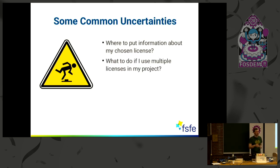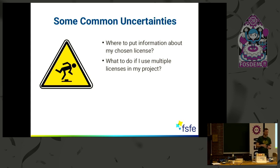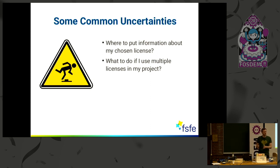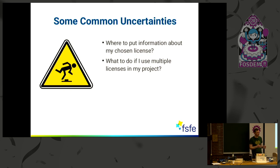What do I do when I have multiple licenses in my project? Your code could be under a GPL license, but you have some documentation which should be under a documentation license like Creative Commons. So you have two licenses now — where do you put this information? Two license files in your repo? That's complicated.